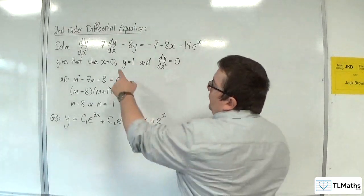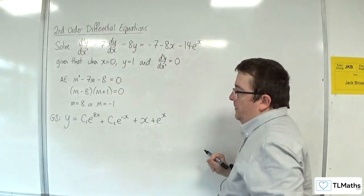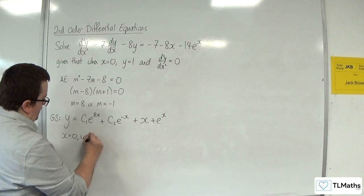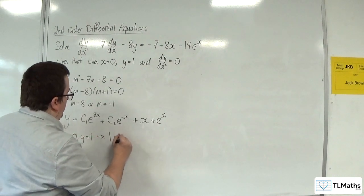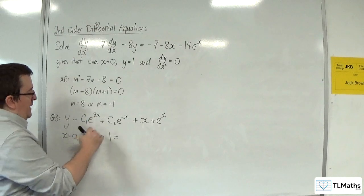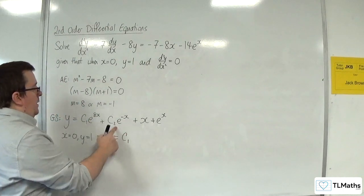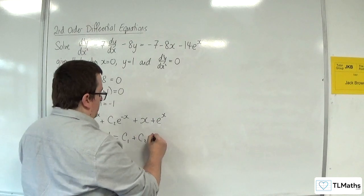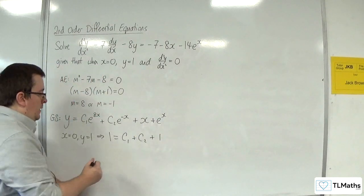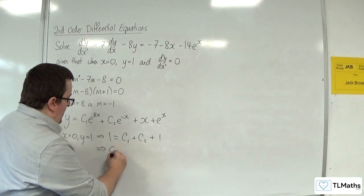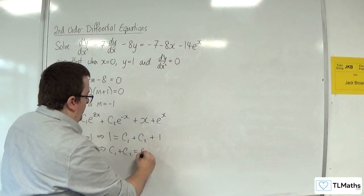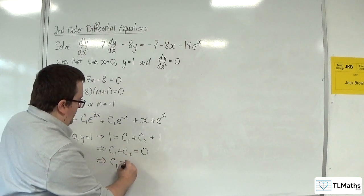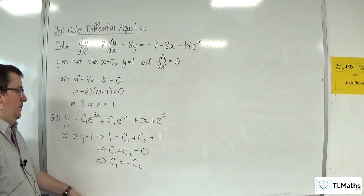And for that I need to use these two bits of information. Now I know that when x is 0, y is equal to 1. So 1 is equal to, if x is 0, then I get c₁, I'm going to get c₂ + 0 + 1. So that means that c₁ + c₂ has got to be equal to 0. In other words, c₁ has got to be equal to -c₂.